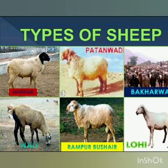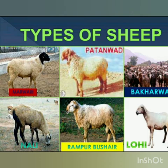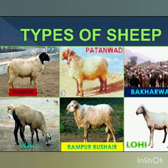Different breeds of sheep are found in India, and depending upon the states where they are found, they are given special names. For example: Marwadi in Gujarat and Rajasthan; Patanwadi in Gujarat; Bhakarwal in Jammu and Kashmir; Nalli in Rajasthan, Punjab and Haryana; Rampur Bushair in Rajasthan, Punjab and Haryana; and Loi in Rajasthan and Punjab.